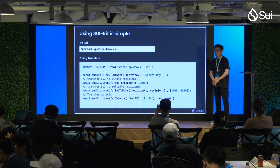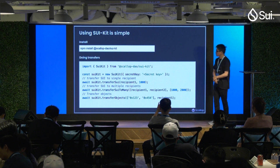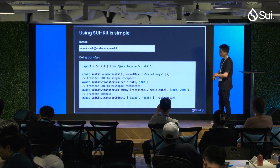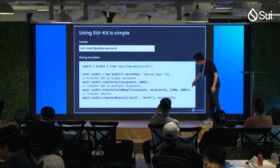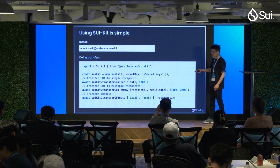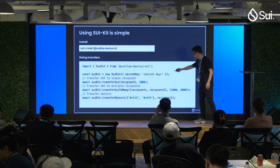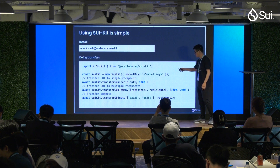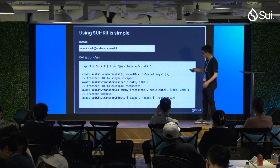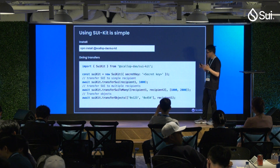So let's see what efforts SuiKit has made to achieve these goals. We've published SuiKit as a public npm package which you can install and import into your code. With just a few lines of code you can start interacting with the Sui network — you just import the SuiKit class and initialize it with your credentials. Here I'm using a secret key, but you can also provide your mnemonic words. We want to make it simple, so we abstract the complexity away from the code.